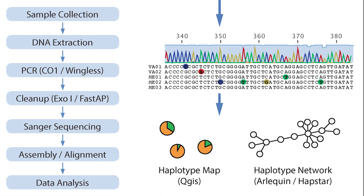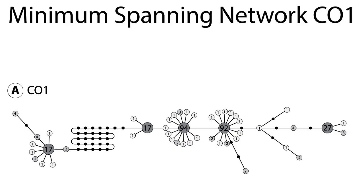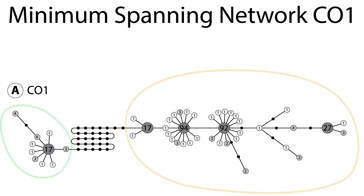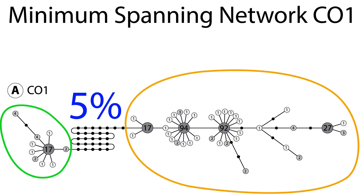Here are our results. You see here the minimum spanning network for the marker CO1. We found two haplotype groups which were quite diverse. The two groups showed a sequence difference of 5%.